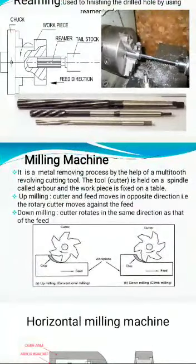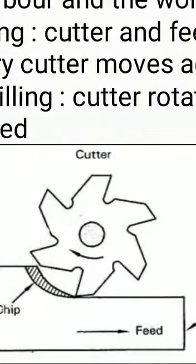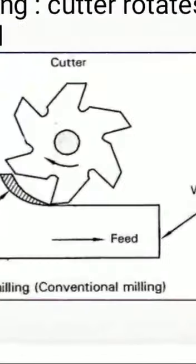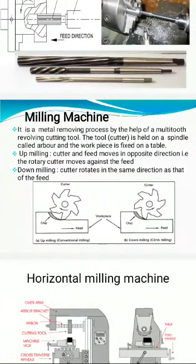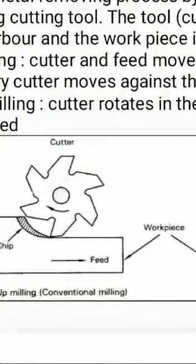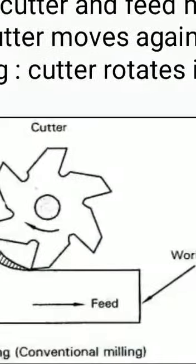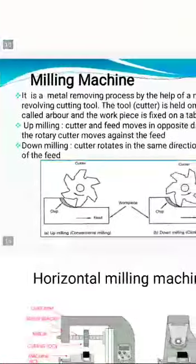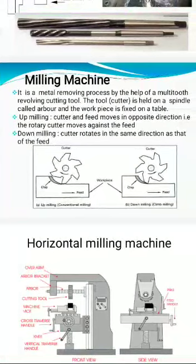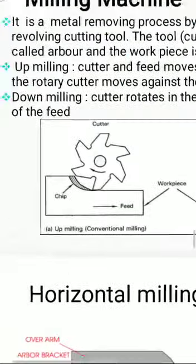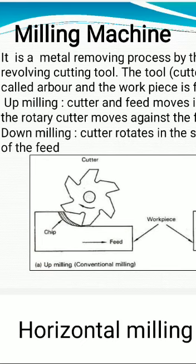Similarly, milling machine. The cutter acts as a tool. How to define milling machine: it is a metal removing process with the help of a multi-tooth cutting tool. Multi-tooth means there are a number of teeth on the cutter. In the lathe machine, the workpiece rotates — but here in the milling machine, the workpiece is fixed and not moved.